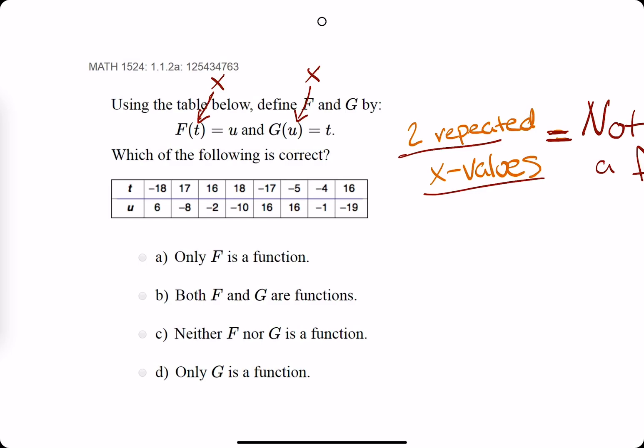So we look at the t values. I see that 16 and 16 are repeated. The idea is that we have the same input for the f function, but it's outputting two different values: negative 2 and 19.